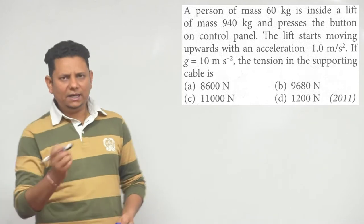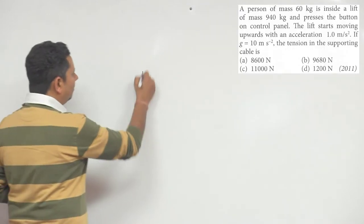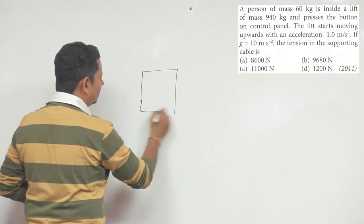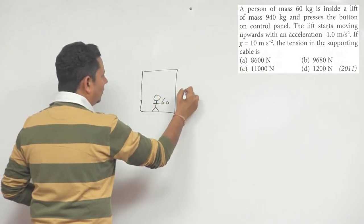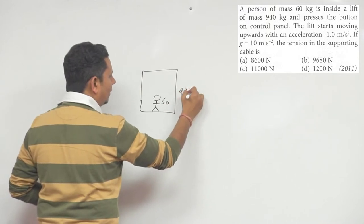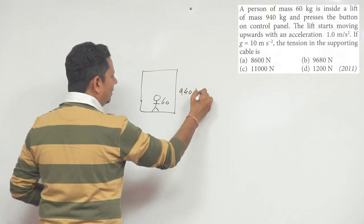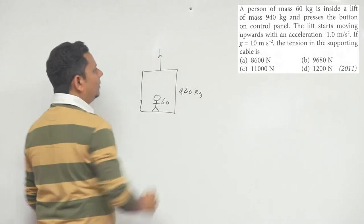This is a simple NLM question. If you make the FBD, one person is 60 kg and the lift is 940 kg. This is 940 kg, and when you press the button,